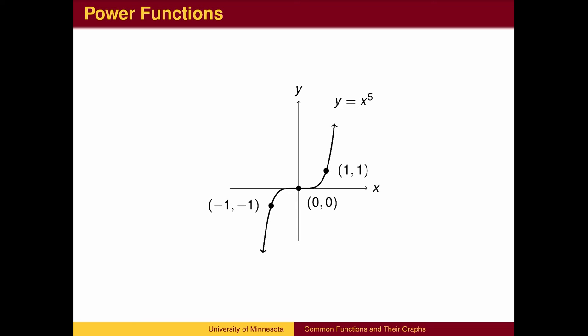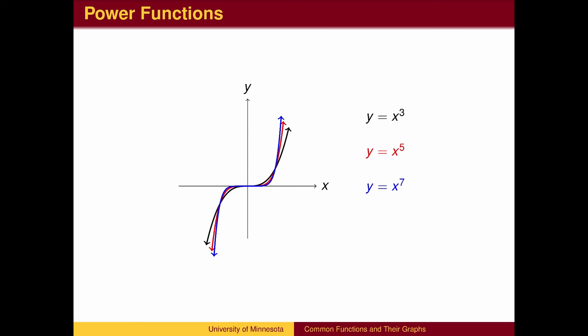All higher odd powers of x, like x to the 5th, x to the 7th, etc., look similar to y equals x cubed. They all go through the origin and are symmetric with respect to the origin. The higher the power, the longer the function stays close to the x-axis and the steeper the graph is beyond x equals 1.